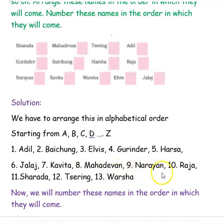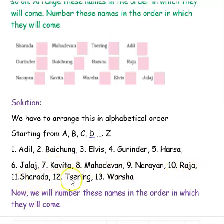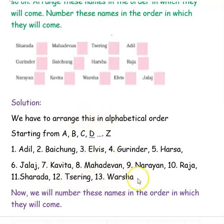Then M — Mahadevan. N — Narayan. O, P, Q are not there, so the tenth is Raja. Then S — Sharada. After S is T — Tersing. Then U is not there, V is not there, so W — Varsha. We have now arranged all the names in alphabetical order.